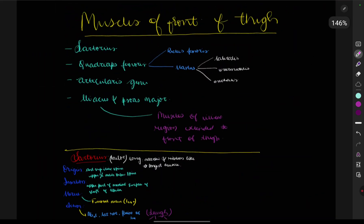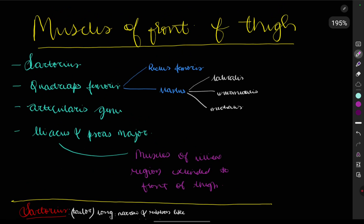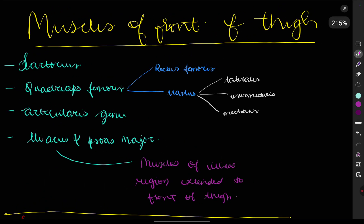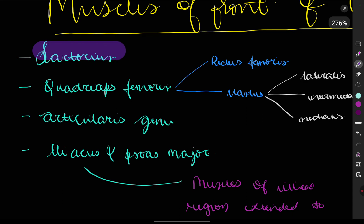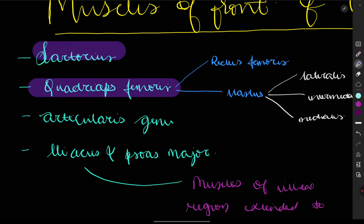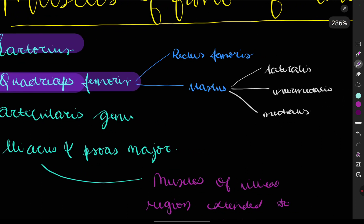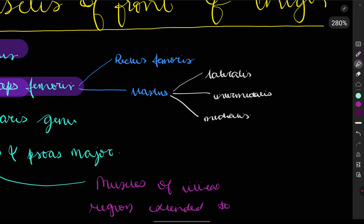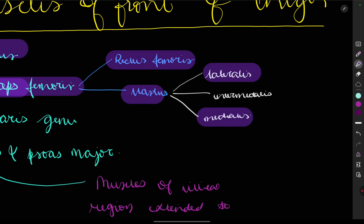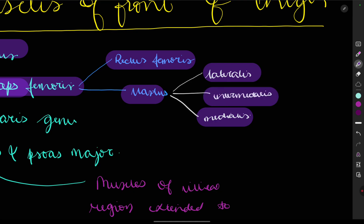Now that we have seen all the bony landmarks, it will be easier to understand the origin and insertion. The muscles of the anterior compartment of the thigh include four muscles: the sartorius muscle and the quadriceps femoris muscle. The quadriceps has four heads — just as the upper limb had biceps with two heads and triceps with three — here we have four: rectus femoris, vastus lateralis, vastus medialis, and vastus intermedialis.